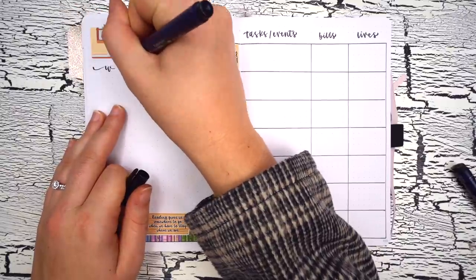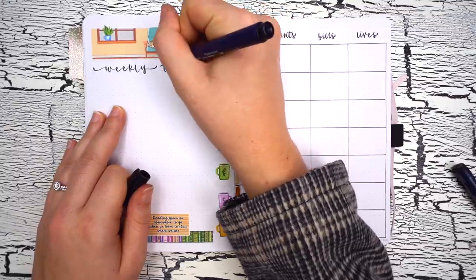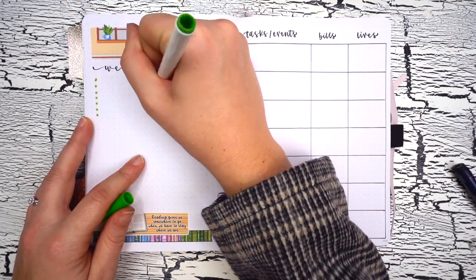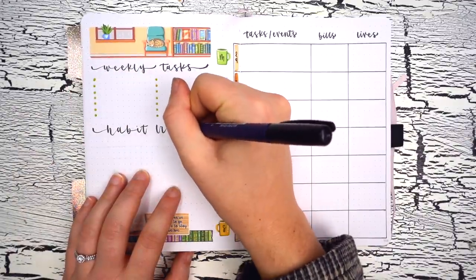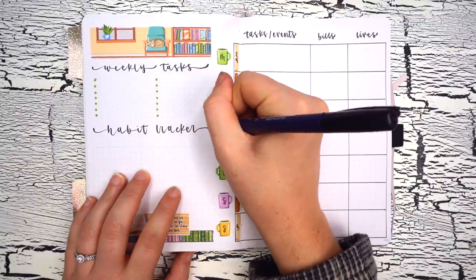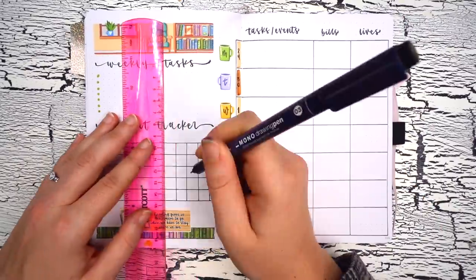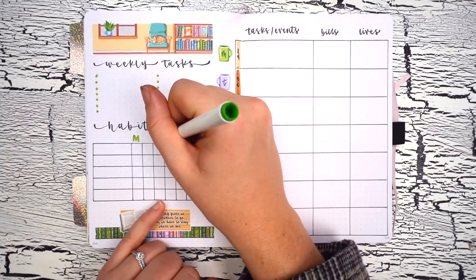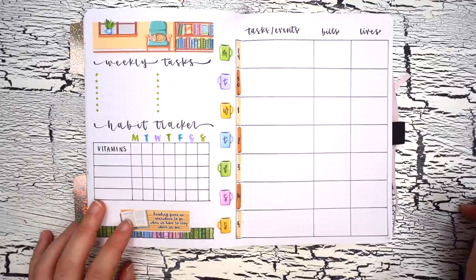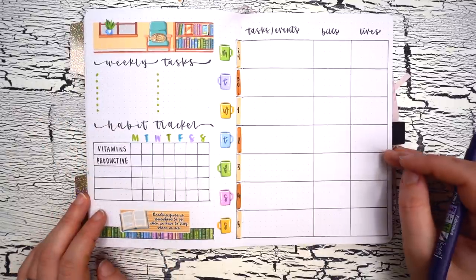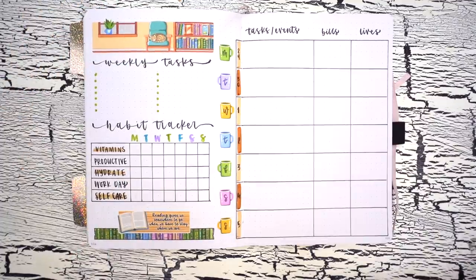To finish up this weekly spread, on the left I'm going to include a weekly task list for any to-do list items that aren't day specific but still need to be completed that week, along with a weekly habit tracker below that. I haven't really been doing any monthly habit tracking for the last few months, not really for any particular reason but just because I do like to take breaks from monthly habit tracking every so often. So I thought it'd be useful to include a weekly habit tracker on this dashboard here to see how it works for me and also as a way to ease back into more regular habit tracking in January. So this habit tracker is just going to include five core habits with a box for each day to check off whether that habit was completed. The habits I decided to go for this week were taking my vitamins, checking off whether I felt like I had a productive day or not, hydrating because I always forget to drink water, a spot to check off what days were work days for me, and finally a self-care habit to check off if I did something that day that I consider to be self-care.